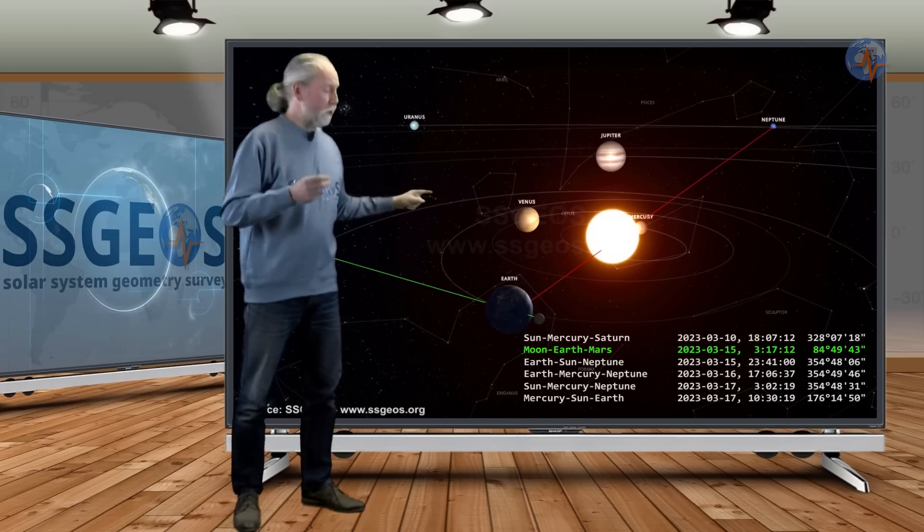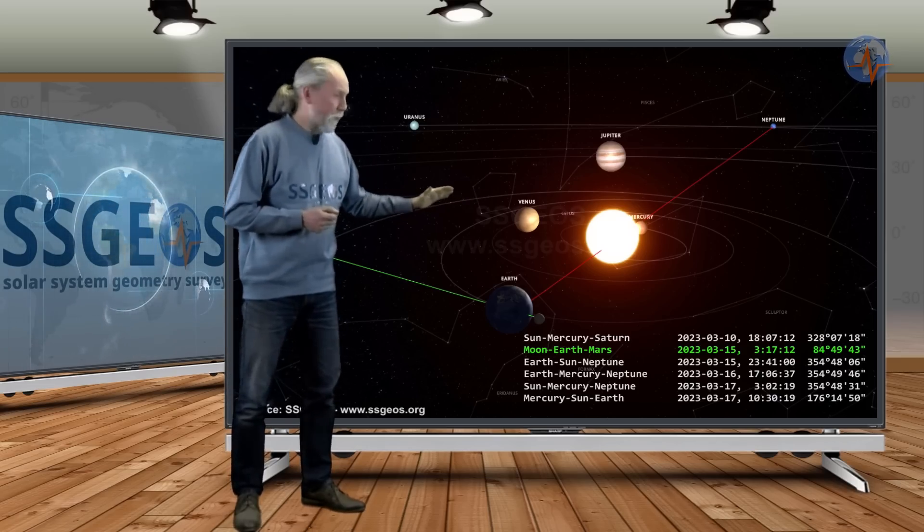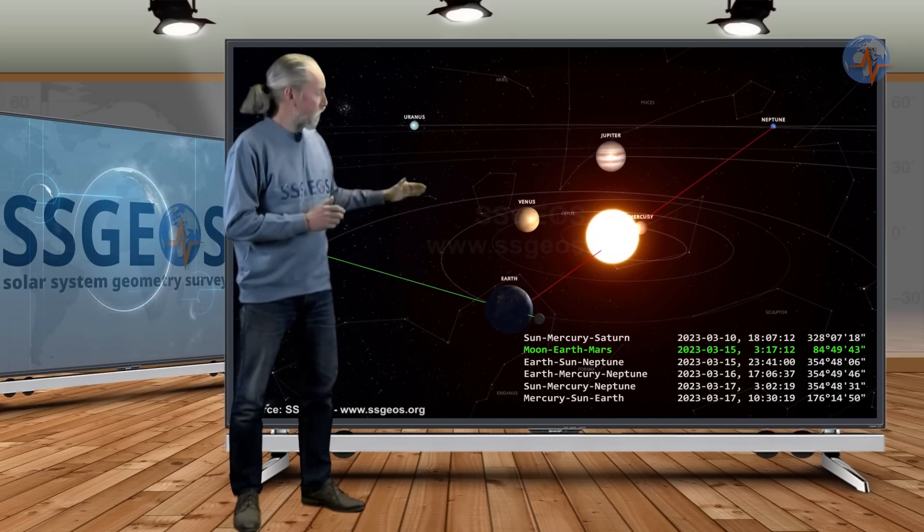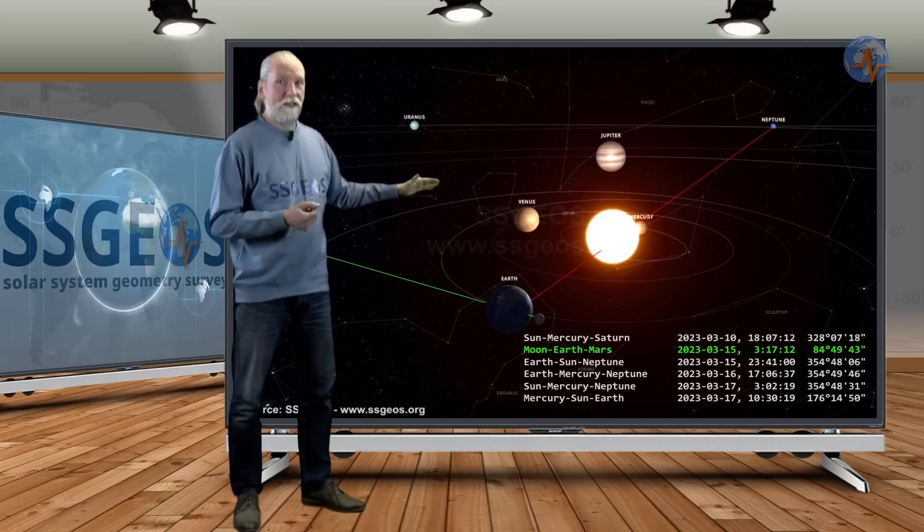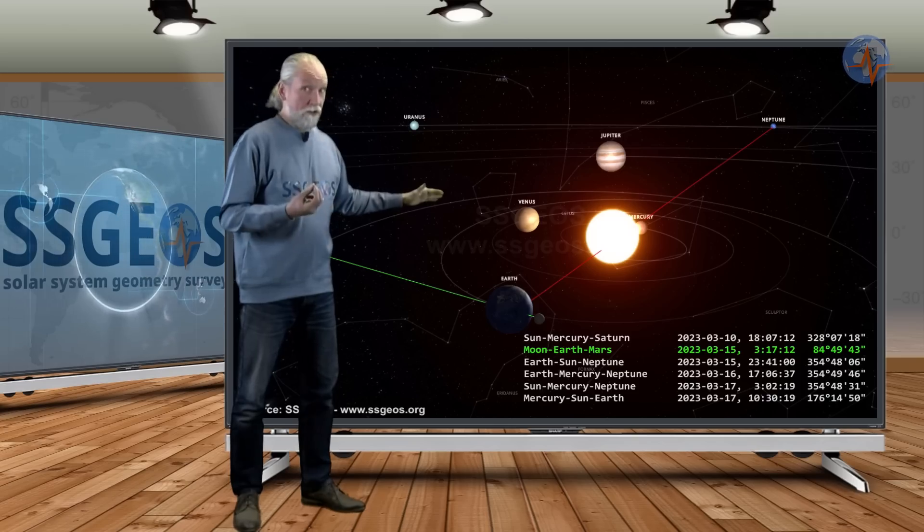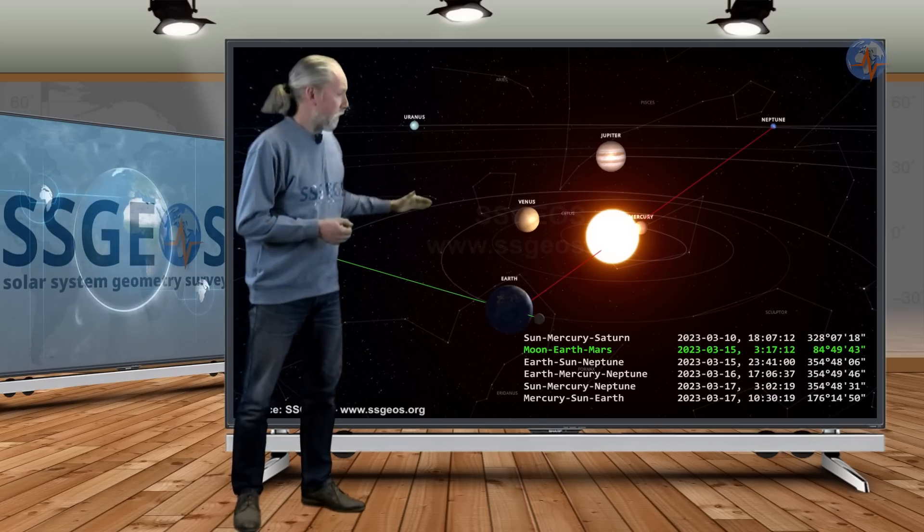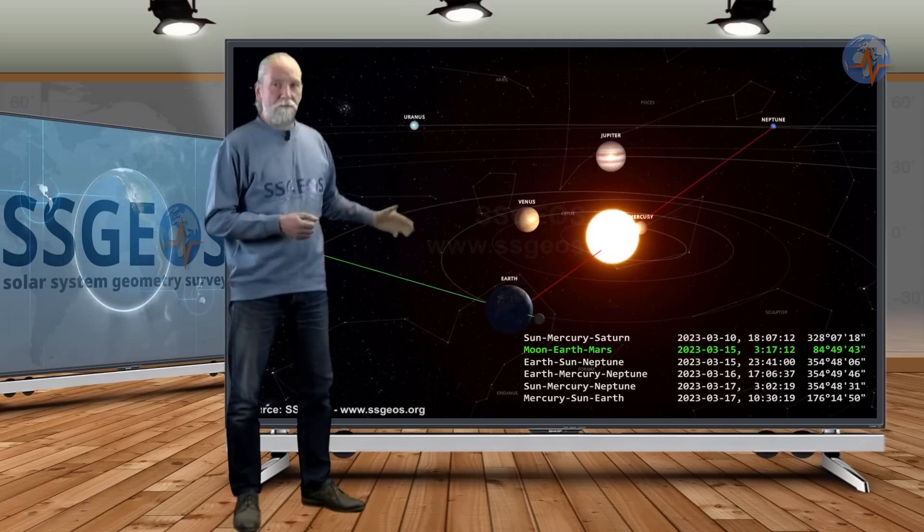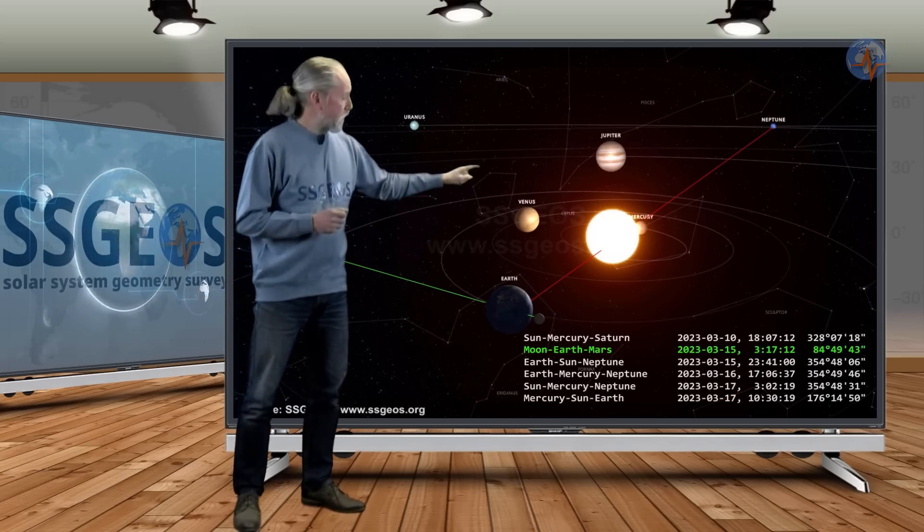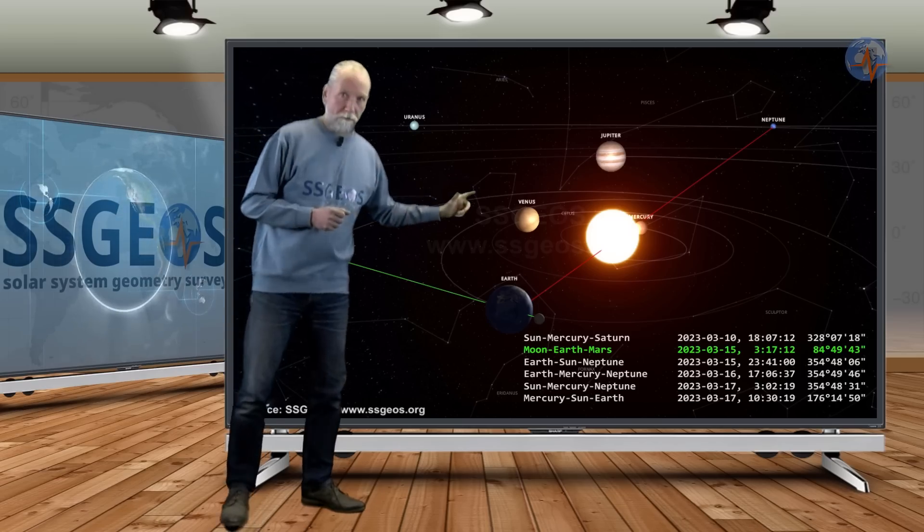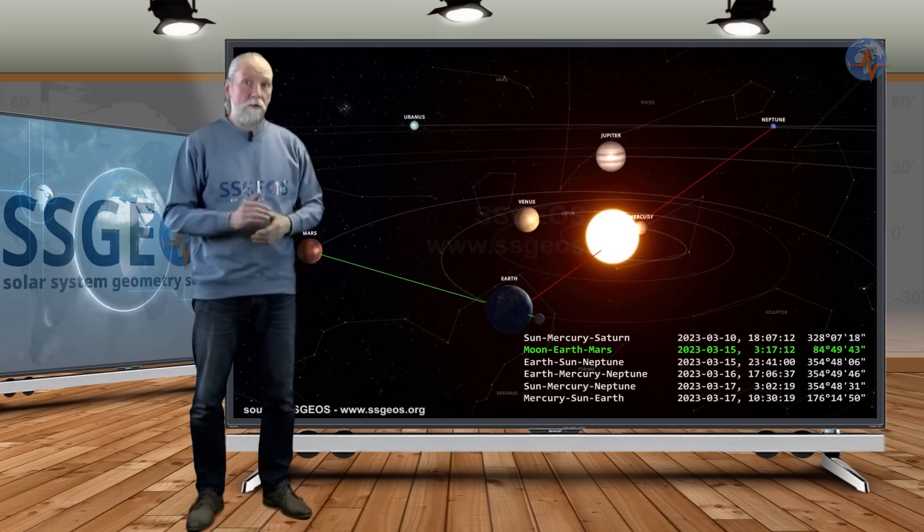Then on the 17th we have two more conjunctions because this is a quadruple conjunction, or a near quadruple conjunction, and that will be Sun, Mercury, Neptune, that will be early on the 17th, and not so much later than the conjunction with Earth, Mercury, Neptune on the 16th. There are only actually several hours in between, so that's very tight. And then also on the 17th, also in the morning, only a few hours later, Mercury, Sun, Earth. So on the 16th and 17th we have three planetary conjunctions converging. Again, that's Earth, Mercury, Neptune; that is Sun, Mercury, Neptune; and then Mercury, Sun, Earth.